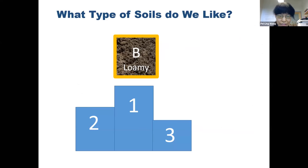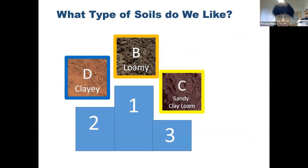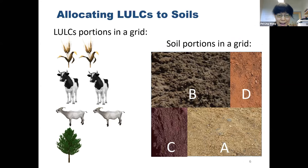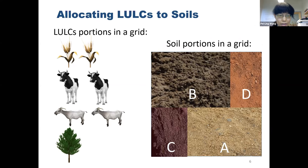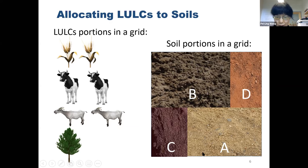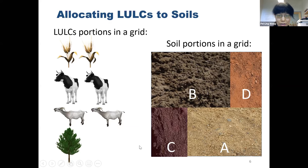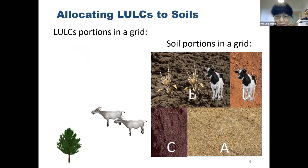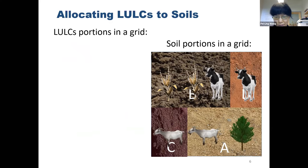The result shows soil group B, the loamy soil, is the most important one, followed by clay soil, sandy clay loam, and sandy soil is the least preferred soil for human use. So once we have that, for any single grid cell, we know the portions of land use and land cover types and the proportions of different soil types, and we can link land use with soil — the most important land uses on the best soils and the least important land uses on the poorest soils.